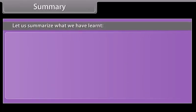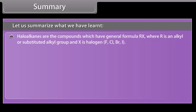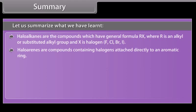Summary. Let us summarize what we have learnt. Haloalkanes are the compounds which have the general formula RX where R is an alkyl or substituted alkyl group and X is halogen F, Cl, Br, or I. Haloarenes are compounds containing halogens attached directly to an aromatic ring.